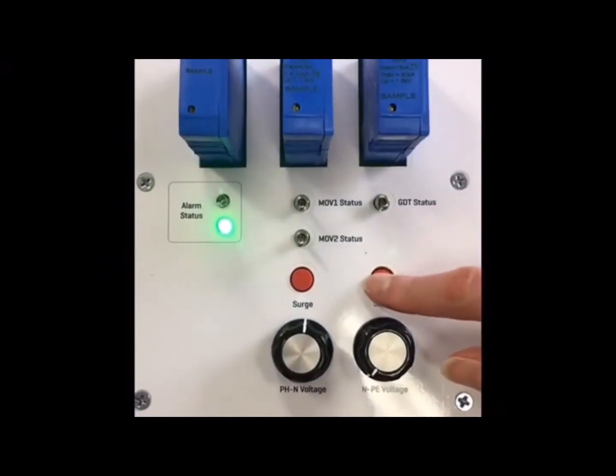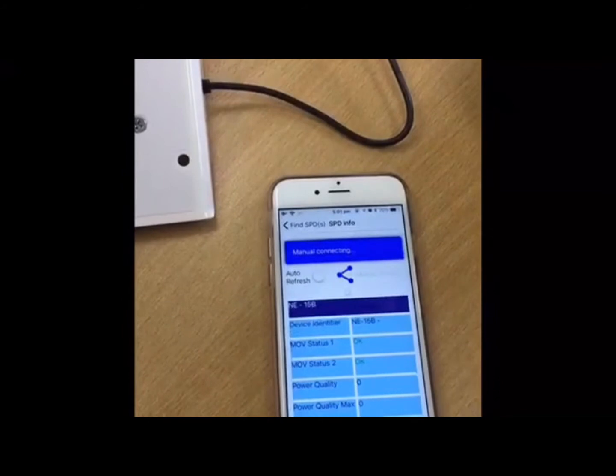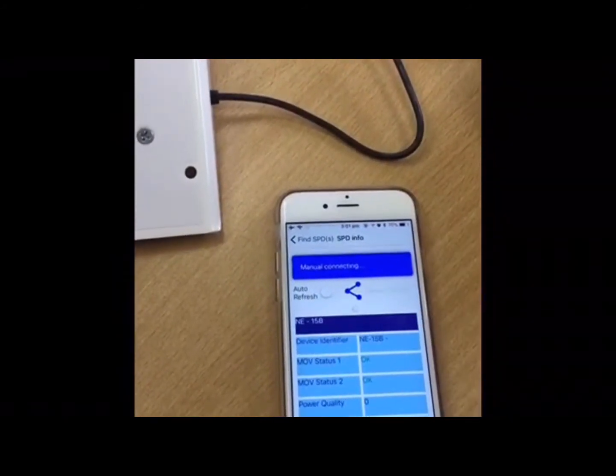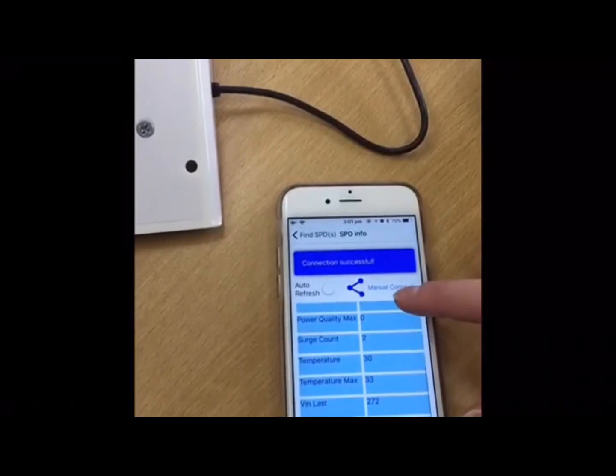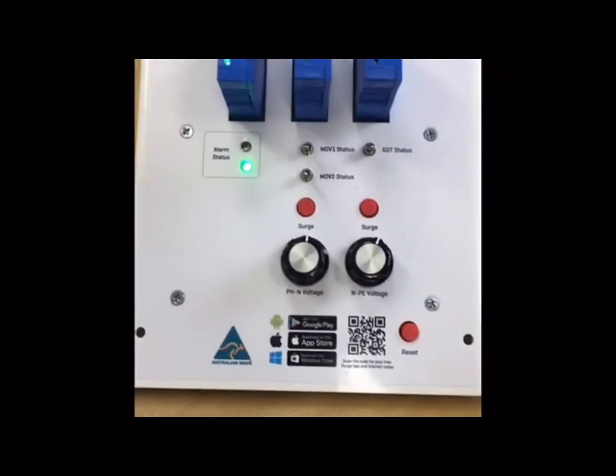The NE15B modules use a single gas discharge tube or GDT as part of its protection circuit. To simulate an internal fault, toggle the GDT switch to the up position and observe both MOV status tabs in the SPD app changed to fail.